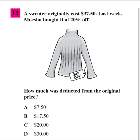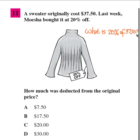Problem 11: A sweater originally cost $37.50. Last week Moshe bought it at 20% off. How much was deducted from the original price? We have to find 20% of 37.50, so X is 20% of 37.50.